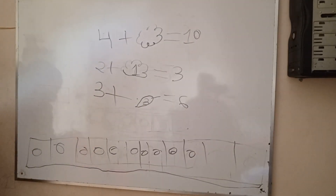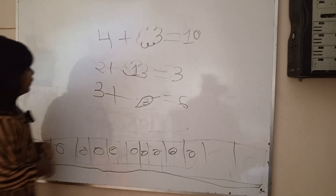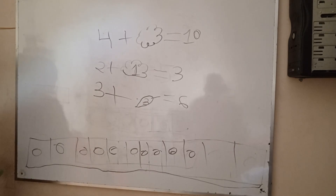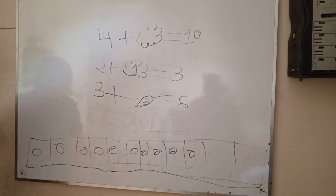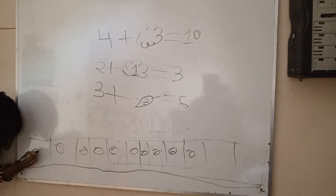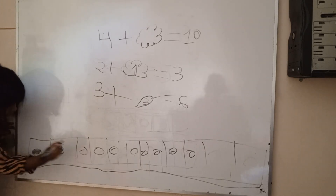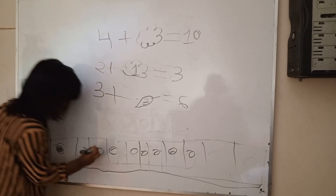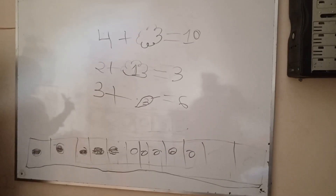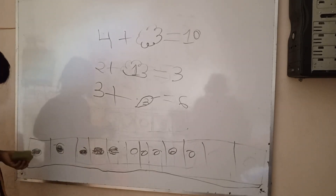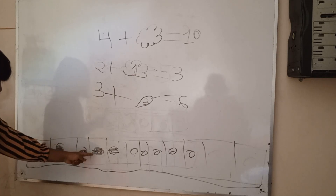Now we are going to do 4 coloring. What did I write here? 4. So how many? 4. Let's count it: 1, 2, 3, 4. 4. Okay. Now let's color it. Color. Color. Color. Color. 1, 2, 3, 4. That's not right. We have to do 4. Let's count it again: 1, 2, 3, 4. 4.